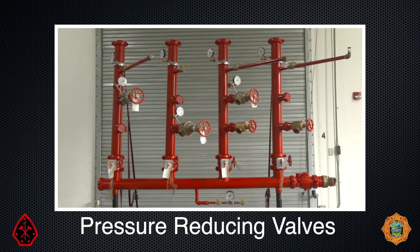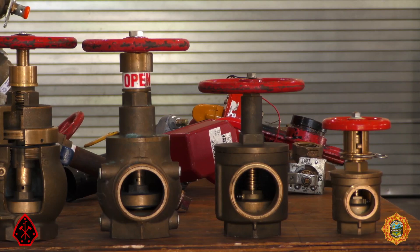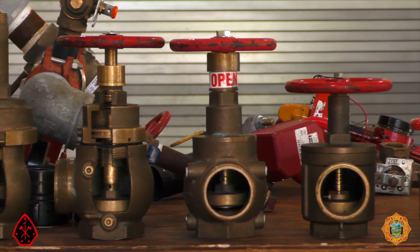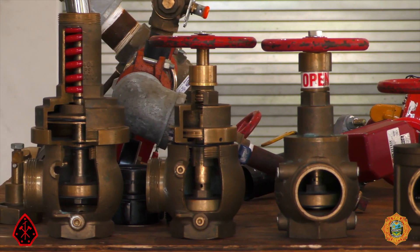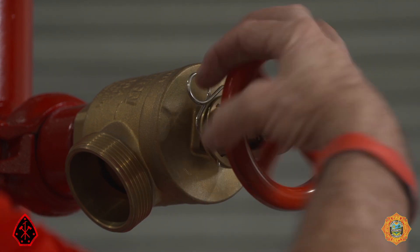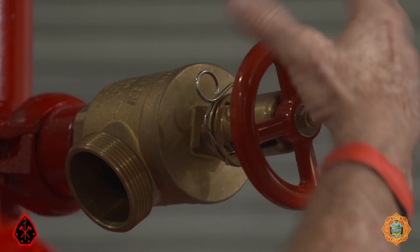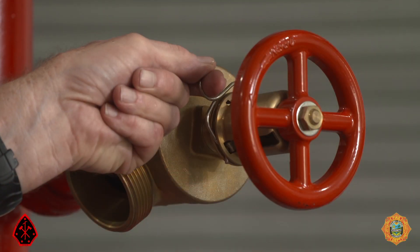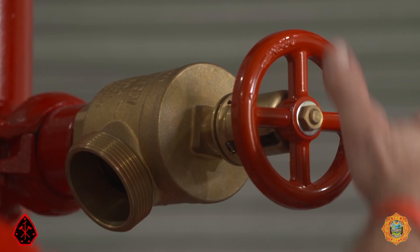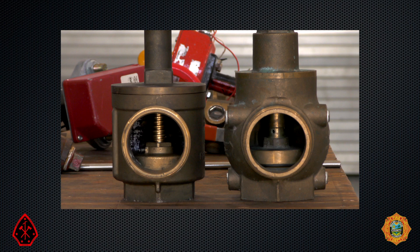Part three of this video series focuses on pressure reducing valves, PRVs. Do not confuse pressure reducing valves, PRVs, with PRDs, pressure restriction devices. As explained in part two of this series, pressure restriction devices, PRDs, are found on conventional standpipe outlets, seen here on the left, that are identified by their threaded valve stem.